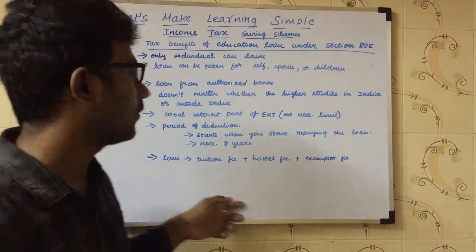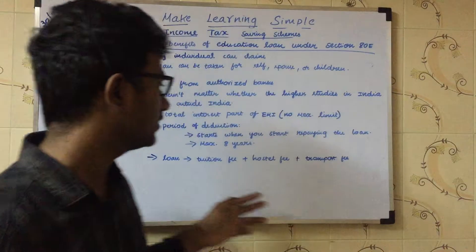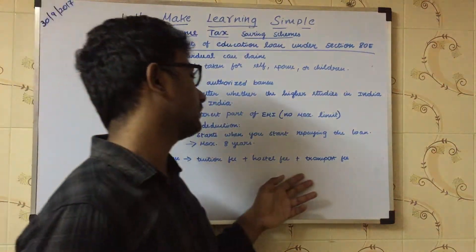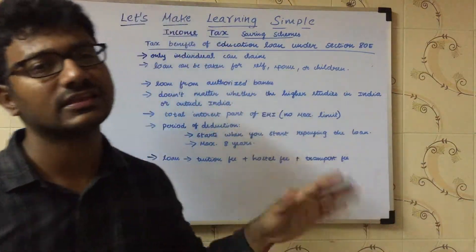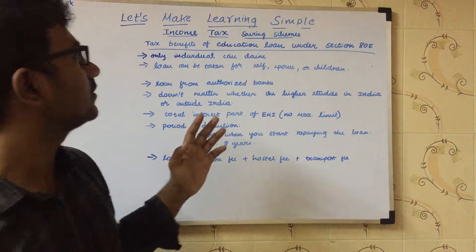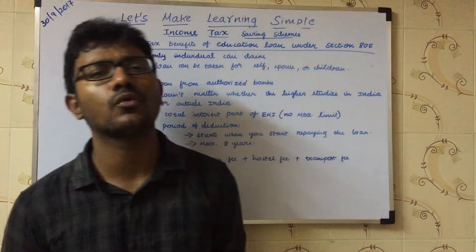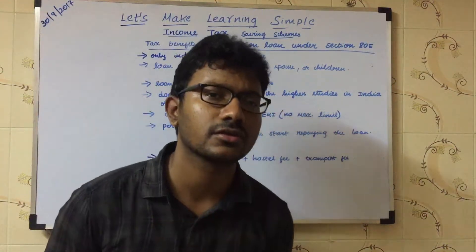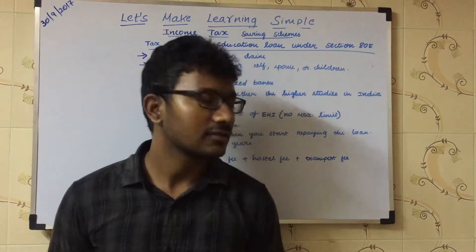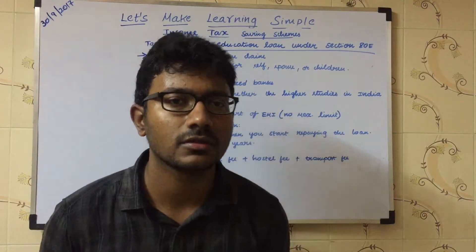Then comes the loan amount. It can be an aggregated value of tuition fee plus transport fee plus other charges. This is all about the education loan deduction under Section 80E. Thanks for watching this video.